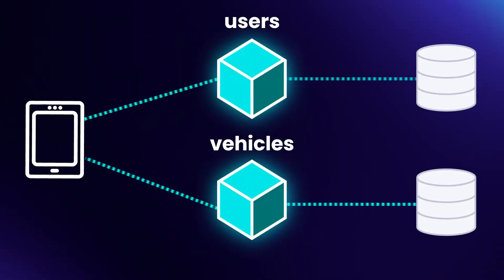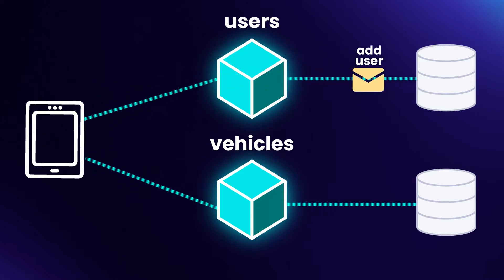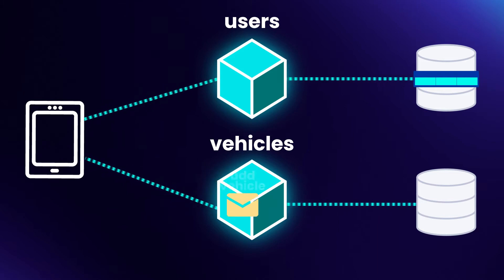Commands are a request to change the state of the system. For example, adding a user or creating a vehicle is a request to change the state. When they are sent, they can either be accepted or rejected. Because it may be important to know whether the command was successful or not, they're often handled synchronously. You send a command and you wait to see if it was accepted.